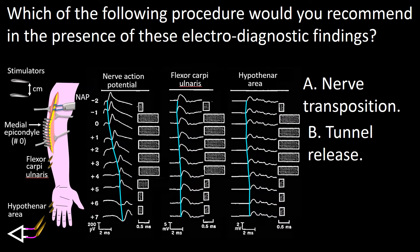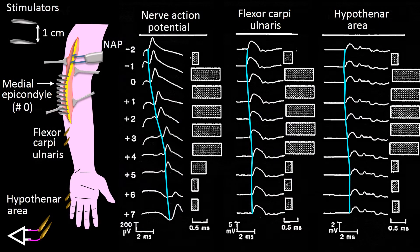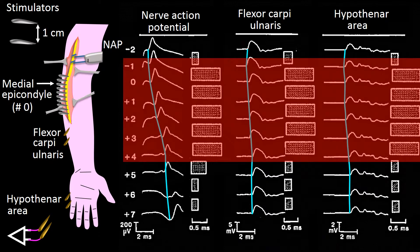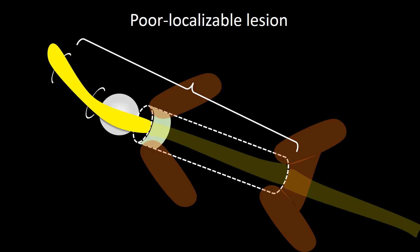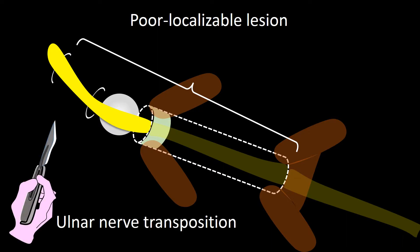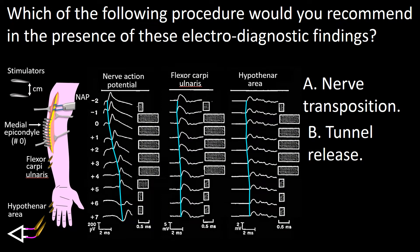Next question: please take a look at this figure and choose one of the options. In this frame, significant inter-electrode slowing involves a much wider area than in the previous case, including the medial epicondyle region. This indicates a poorly localizable lesion, likely requiring ulnar nerve transposition. So the answer to this question is A.